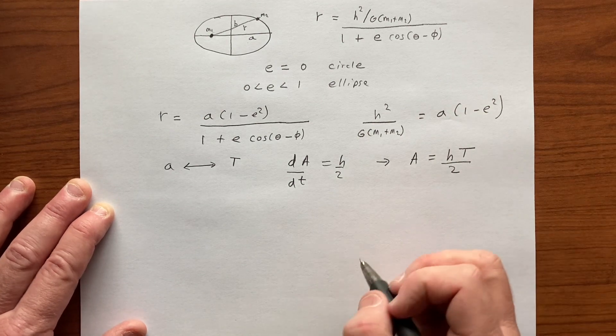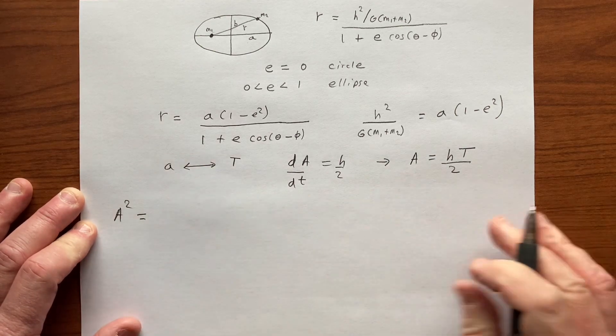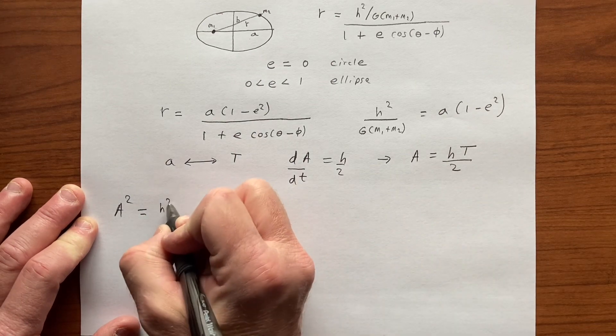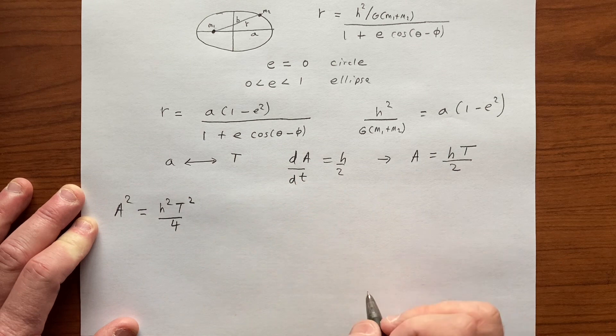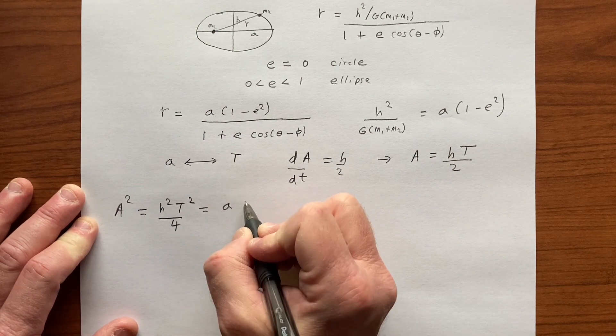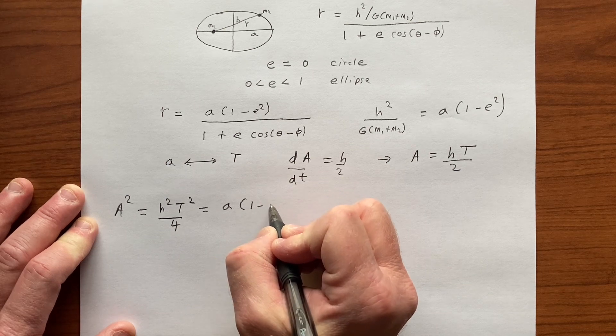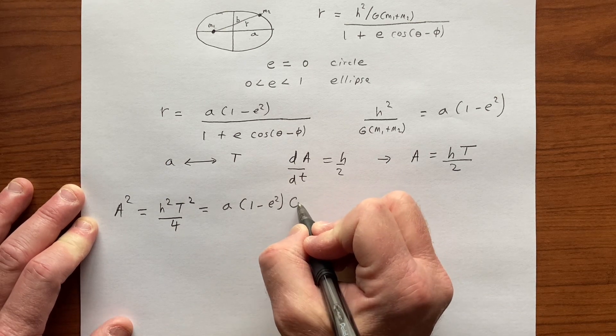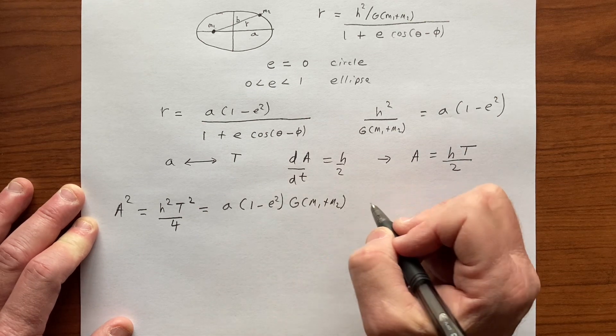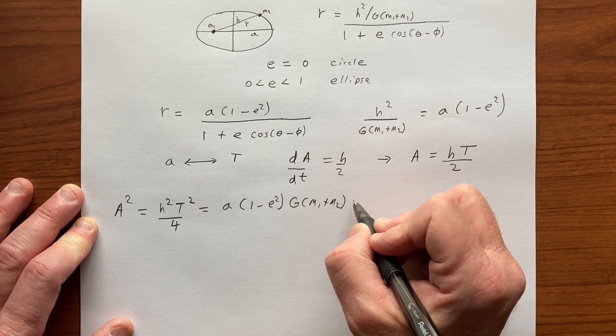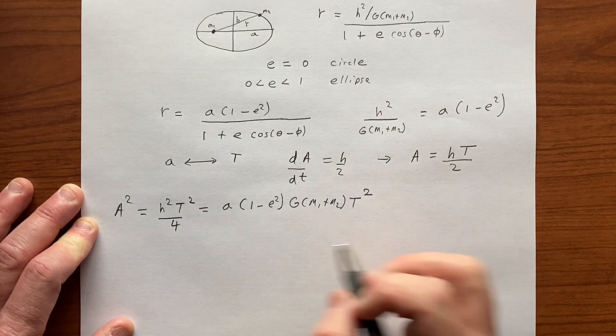And so we have A squared is equal to H squared T squared over 4, and that is equal to A times 1 minus E squared times G(M1 plus M2) times T squared over 4.